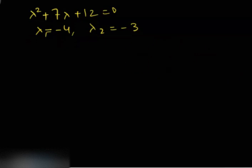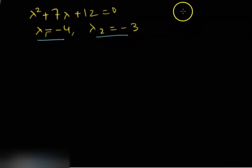Both eigenvalues are negative: λ1 = -4 and λ2 = -3. So the behavior we expect for this system should be a sink — the origin is a stable equilibrium point. All trajectories will approach the origin as t tends to infinity. We still need to find the directions along which trajectories approach, so we calculate the eigenvectors.